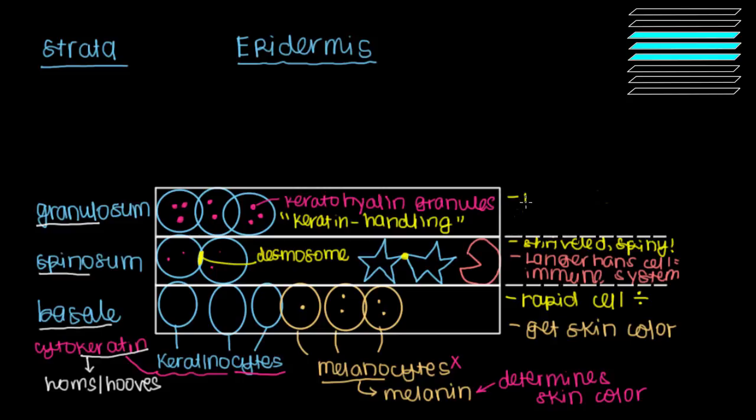The other thing the stratum granulosum does is that it releases these things that are called lamellar bodies. And these lamellar bodies contain a whole bunch of lipids that then come together and form a strong lipid layer that sits at the top of our skin. This lipid layer is impermeable. It gives the skin its watertight capabilities that prevent foreign pathogens from making their way down deeper into our skin and eventually into our bloodstream.